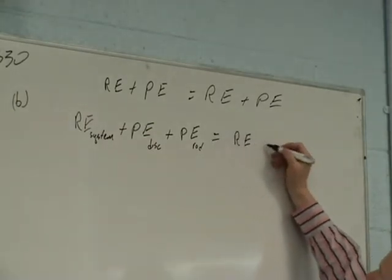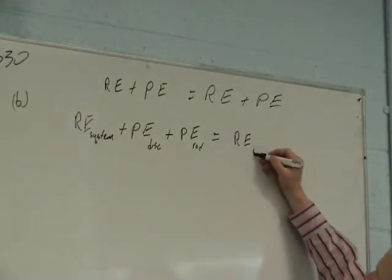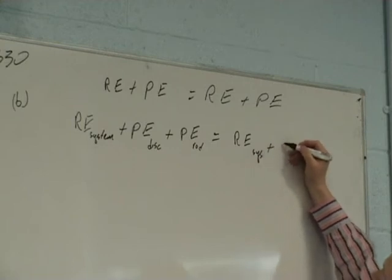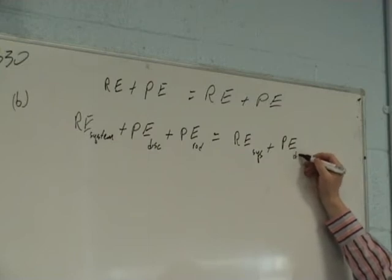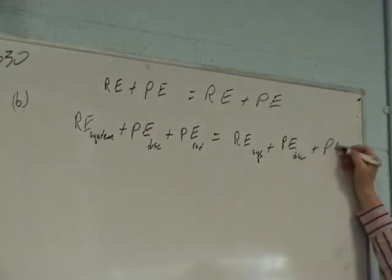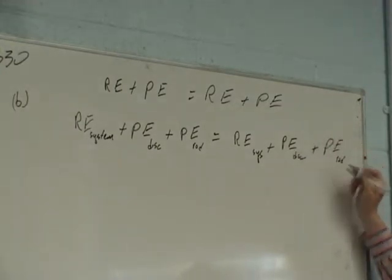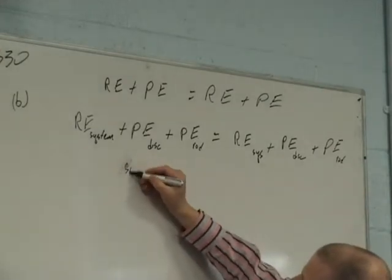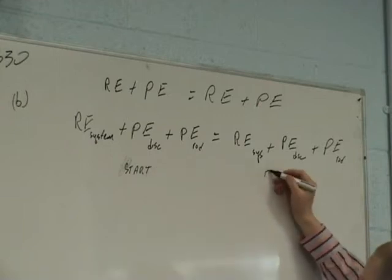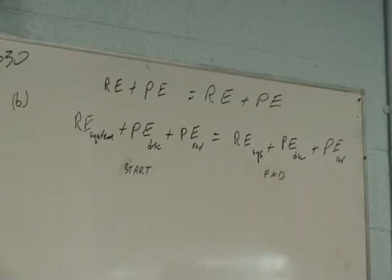Equals. It's all going to have the same rotational energy down at the bottom, so that's for the system. Plus potential energy for the disk at the bottom, plus potential energy for the rod at the bottom. So all of this is at the start point and all of this is the end point.